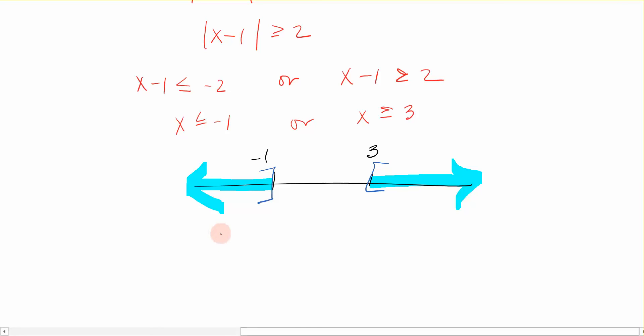To write that, it looks like negative infinity comma negative 1, with a bracket and a parentheses. Union 3 comma infinity. Because I have to combine these two sets together, I'm combining these two interval notations together, we call it a union. And that's how you're going to write the solution set for these absolute value inequalities.